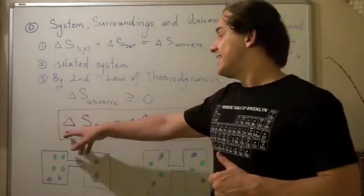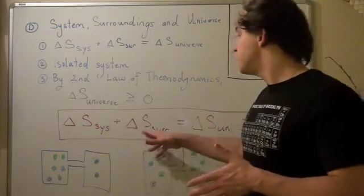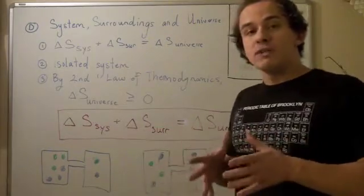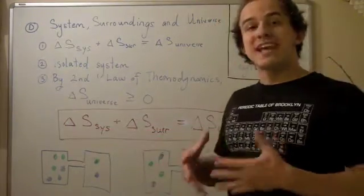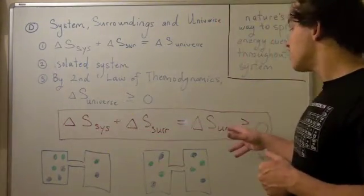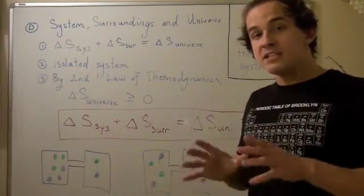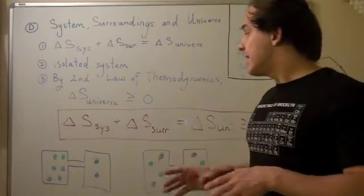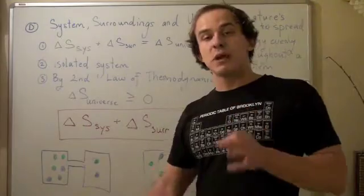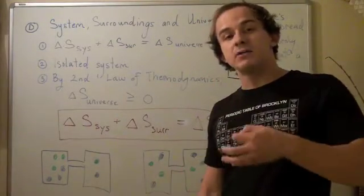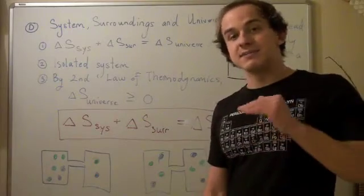But if the system decreases in entropy by 10, and the surroundings increase only by 9, then we get negative 10 plus 9 equals negative 1, a negative number—a violation of the second law of thermodynamics. This tells us that if the entropy of the system decreases, the entropy of the surroundings must increase by the same amount or greater. It can never increase by less.